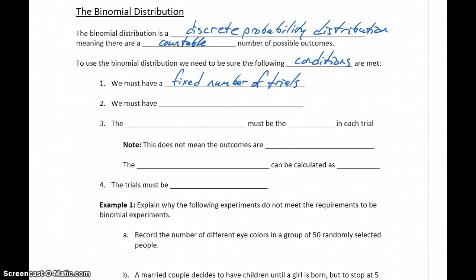So when we begin our experiment, we need to decide on n number of trials — so 15 trials, 10 trials, however many.